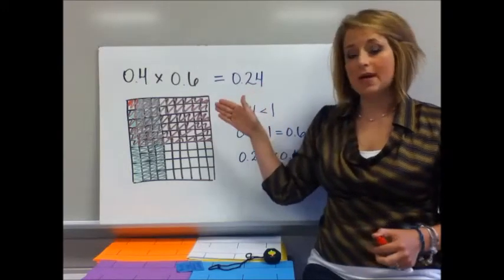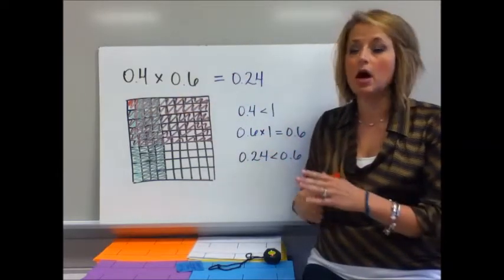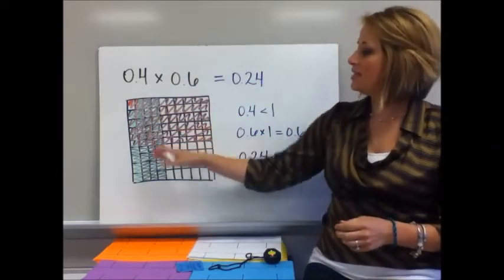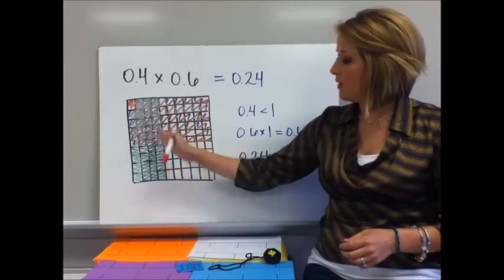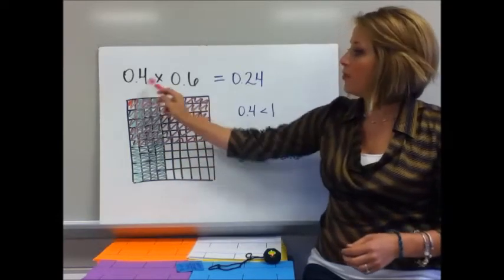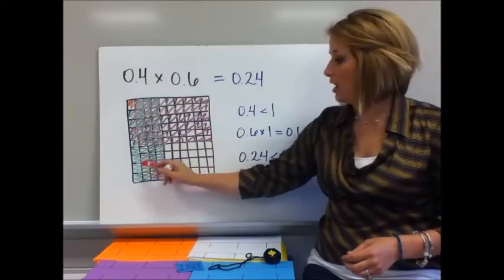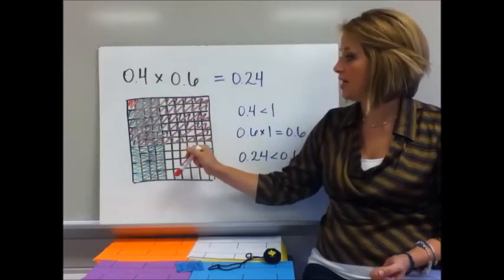When you learn multiplication, you thought of 4 times 6 maybe as 4 rows of 6 or 6 columns of 4. This is a 100 grid, and what I have done is I've split it up where they have 10 rows and 10 columns. So for 0.4, I shaded those with the green. There are 40 hundredths or 4 tenths, 4 columns that are shaded.